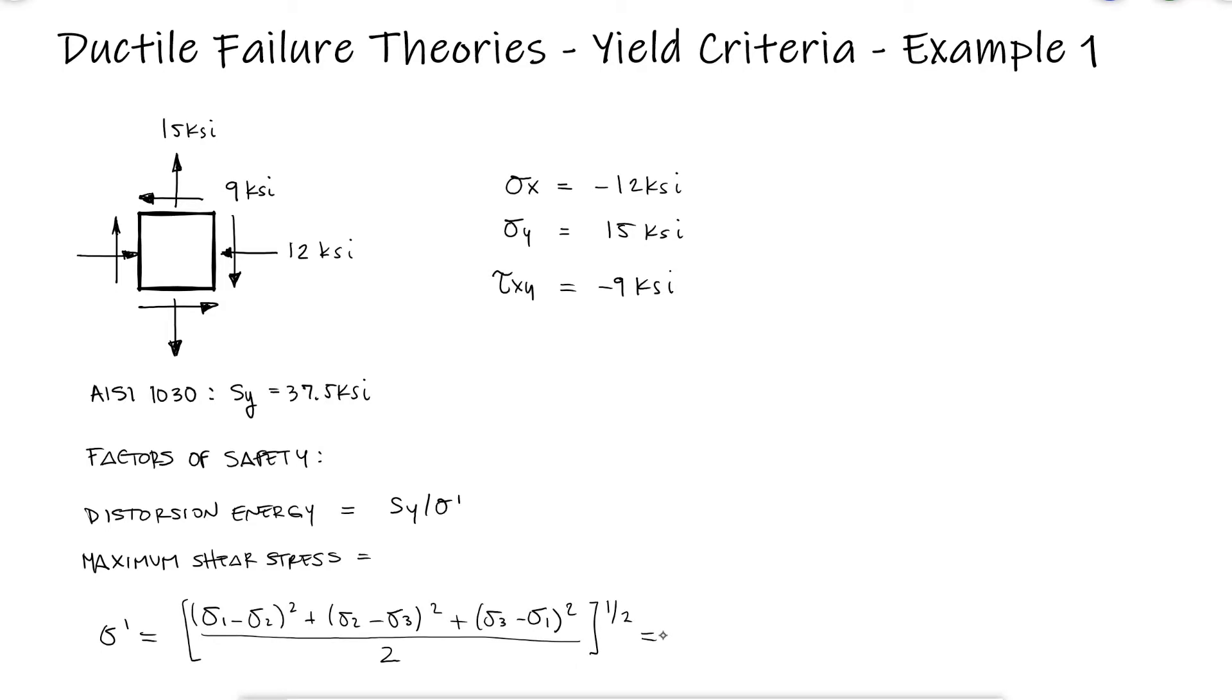From that main video we also know that the maximum shearing stress is equal to the yield strength over sigma 1 minus sigma 3, so in both cases we need our principal stresses sigma 1, sigma 2, and sigma 3.